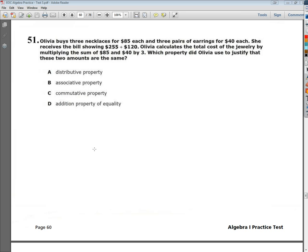Olivia buys three necklaces for $85 each and three pairs of earrings for $40 each. She receives the bill showing $255 plus $120.